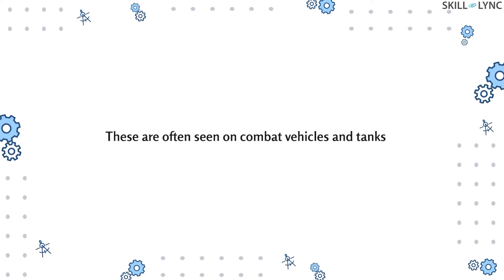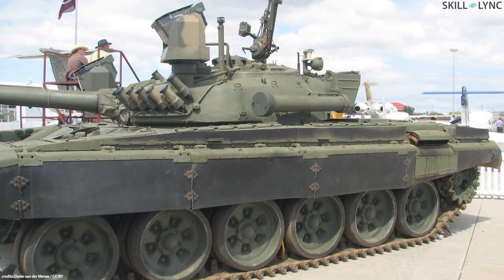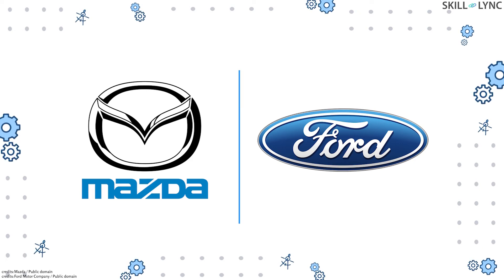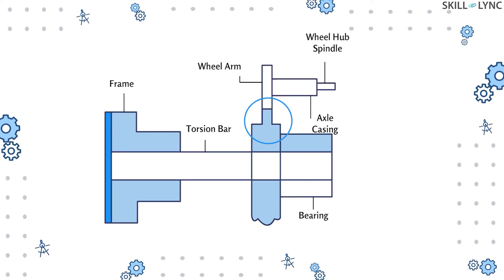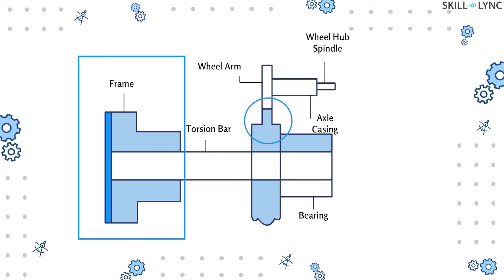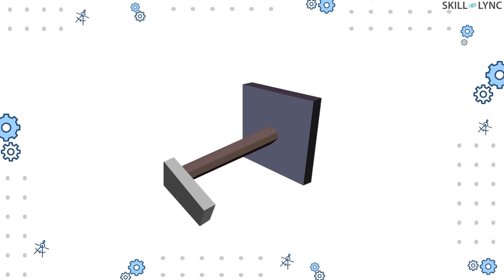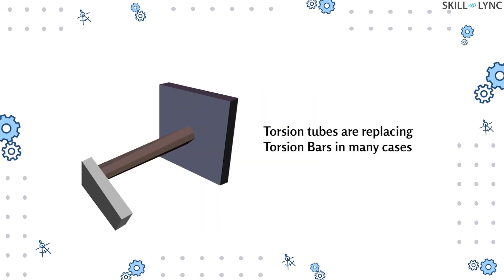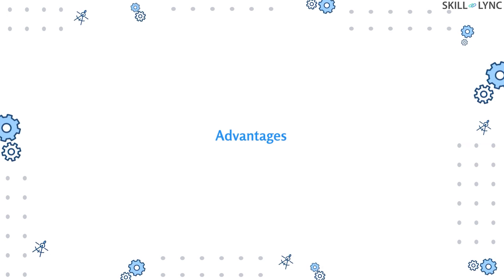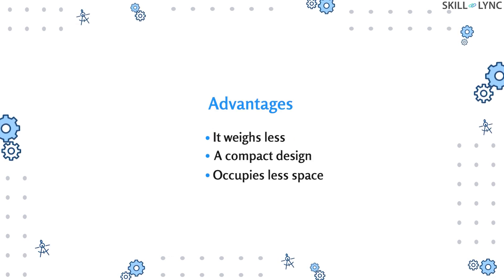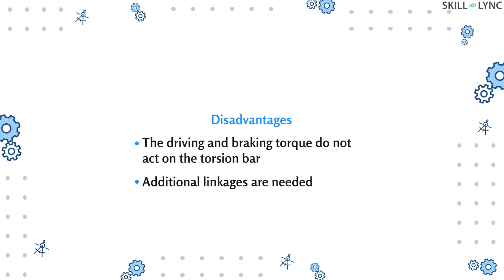The last type of steel spring is the torsion bar. These are often seen on combat vehicles and tanks like the T-72 and Leopard, and also in modern trucks and SUVs from Ford, Mazda, etc. The torsion bar is a steel bar operated by twisting — one end is connected to the frame and the other to the wheel arm. When the car runs over a bump, the wheel moves up and down, producing a torque that twists the bar around its axis. Torsion tubes, which are hollow and light, are replacing torsion bars in many cases. The main advantage is that torsion bars weigh less and have a compact design occupying less space. The disadvantage is that driving and braking torque do not act on the torsion bar, so additional linkages are needed.